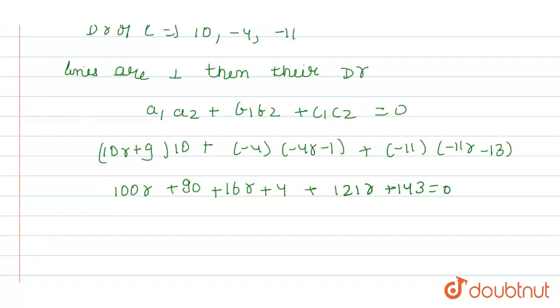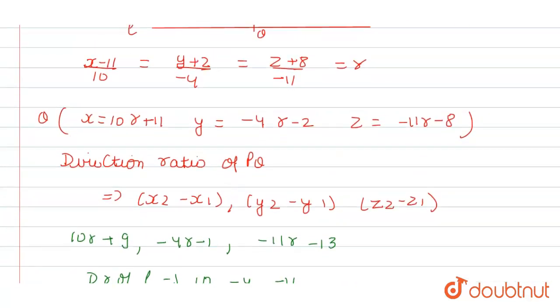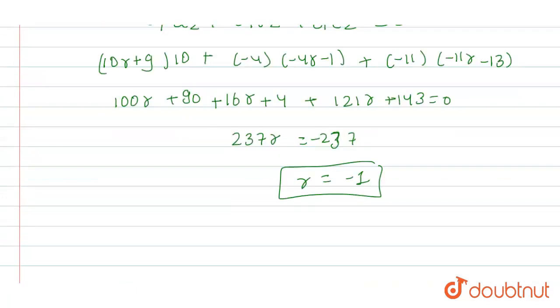So from here we get 237R = -237. So from here we get R value as -1. Now we get R value as -1.